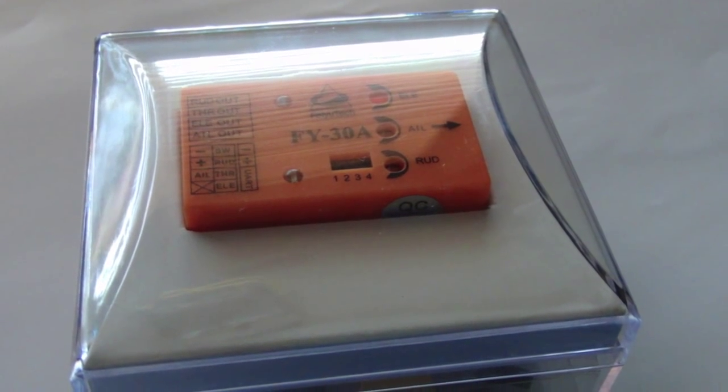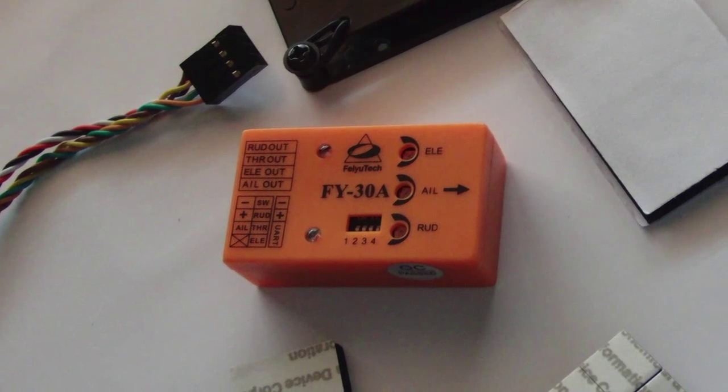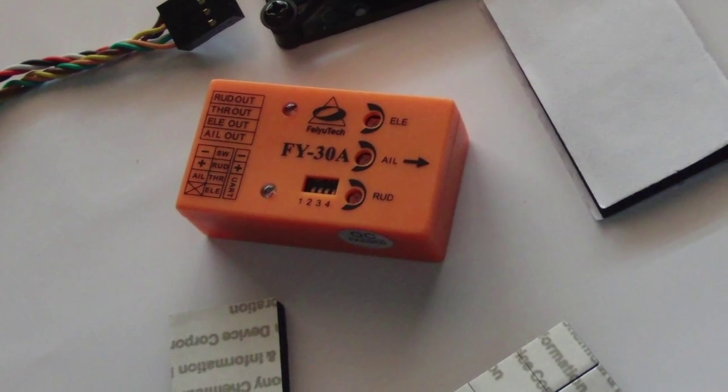This is the FY30A from FoxtechFPV.com. It's a flight stabilization system that uses gyroscopes and accelerometers to make your plane fly like it's on rails.